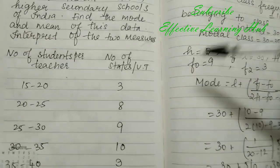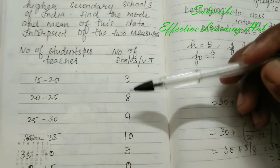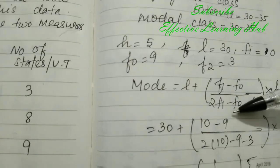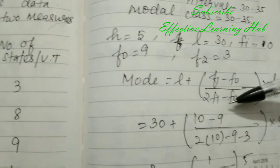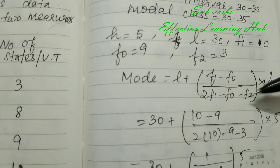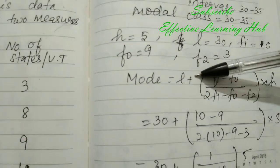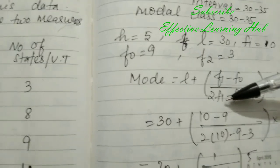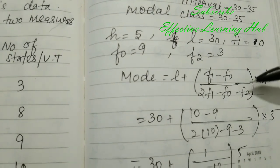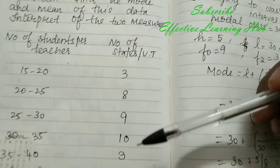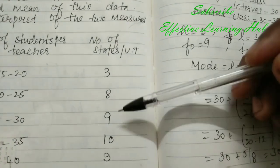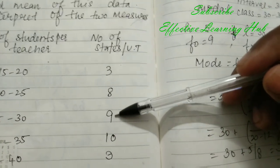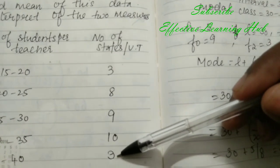Already we discussed mode formula: L plus f1 minus f0 divided by 2 into f1 minus f0 minus f2 into h. Here largest frequency, highest frequency is 10, so preceding the number f0 is 9, succeeding the number is f2.